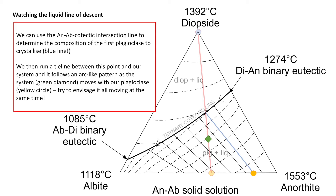How the system evolves is quite difficult to depict in one slide, but here's the approach. At the start we draw a line between the first plagioclase composition and the current system, and the system evolves down-temperature along this line. As it does, the plagioclase composition evolves along with the liquid, giving the system this sort of arcuate pattern as you follow the cursor — evolving with both the system path and the red line.